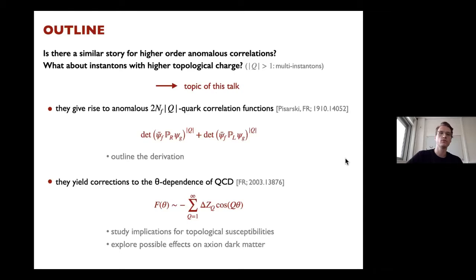One might ask whether there is a similar story for higher-order anomalous correlations — for example, the determinant squared — and what about instantons with higher topological charge. This is the topic of my talk. I will show that, as a direct generalization of 't Hooft's result, they give rise to anomalous 2N_f·q quark correlation functions, giving determinant-to-the-power-q contributions.